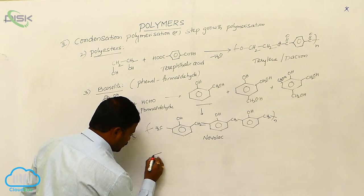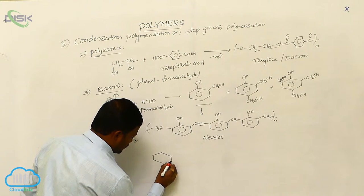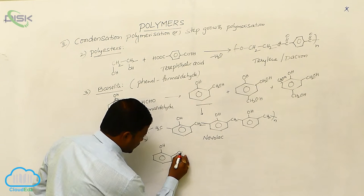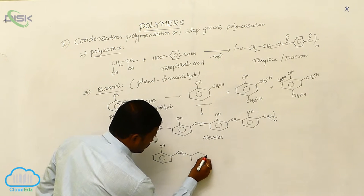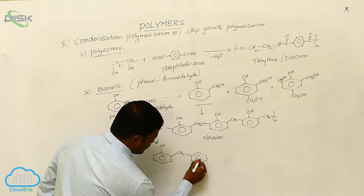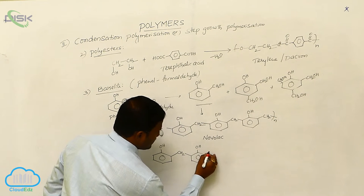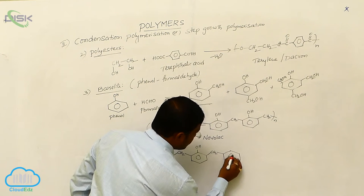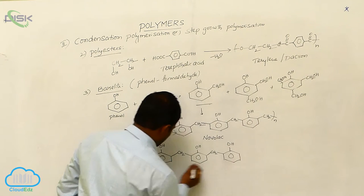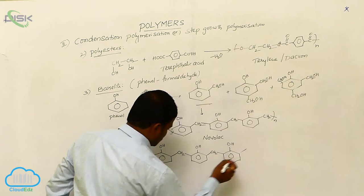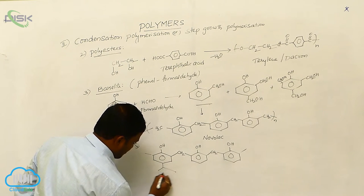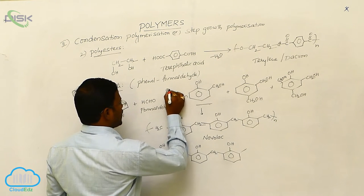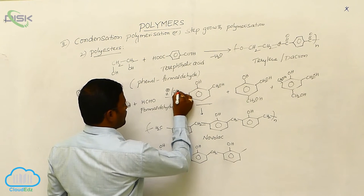This NOVOLAC is going to produce a long chain with some repeated branchings. So this is called NOVOLAC, CH2OH, CH2OH, CH2OH. It continuously takes place where n number of... This reaction is expected either in acidic medium or basic medium.